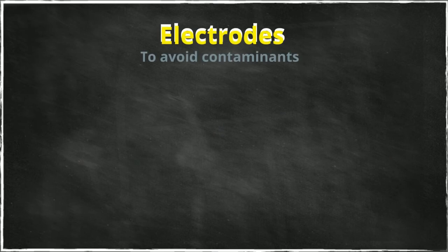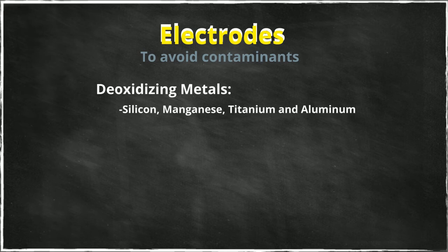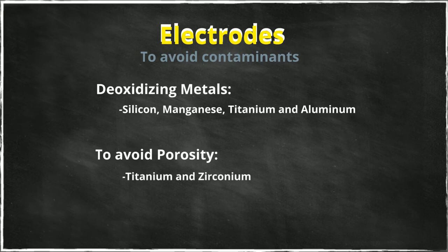To achieve those goals, a wide variety of electrodes exist. The commercially available electrodes contain deoxidizing metals such as silicon, manganese, titanium, and aluminum, in small percentages to help prevent oxygen porosity. Some contain metals such as titanium and zirconium to avoid nitrogen porosity.